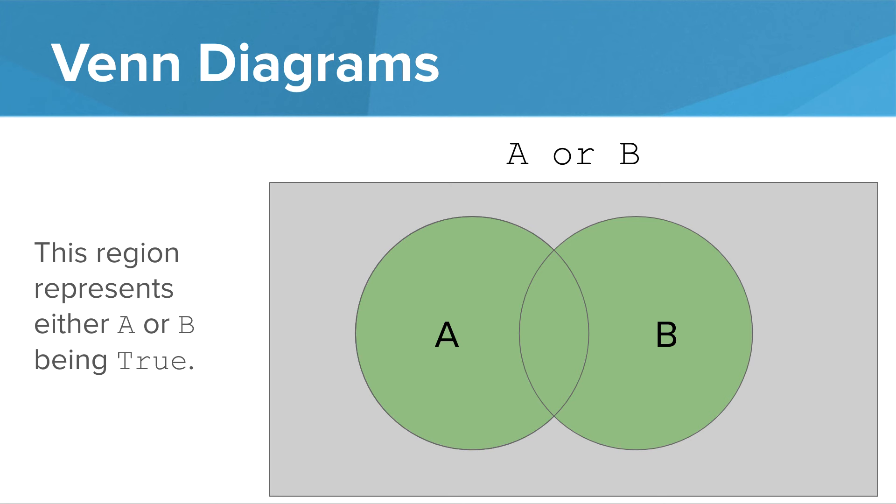This region represents either A or B being true, which makes the expression A or B evaluate to true. The word or basically means make everything green that was already green in either original expression.